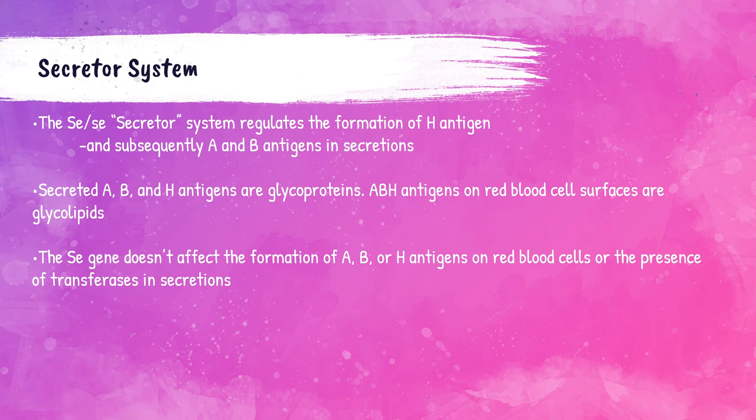The secretor system regulates the formation of the H antigen. Since the H antigen is responsible for the expression of A and B antigens, the secretor system subsequently regulates A and B antigens in secretions. A, B, and H antigens on the red blood cell surface are glycolipids, whereas the secreted A, B, and H antigens are glycoproteins. The SE gene doesn't affect the formation of A, B, or H antigens on the surface of red blood cells, only their presence in body fluid secretions.